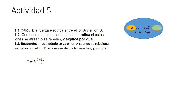La actividad número 5 dice: calcula la fuerza eléctrica que tiene el ión A y el ión B. ¿Qué es un ión? En química se conoce bastante este concepto: un ión es aquel átomo, una partícula, que ha perdido o ha ganado electrones, es decir, queda cargada positiva o negativamente. En general se les llama ión a aquel que tiene una carga diferente de la neutral. Si quedó con deficiencia de electrones, cargado positivamente, le llamamos catión; con exceso de electrones, anión. A estos dos en general se les llama ión.